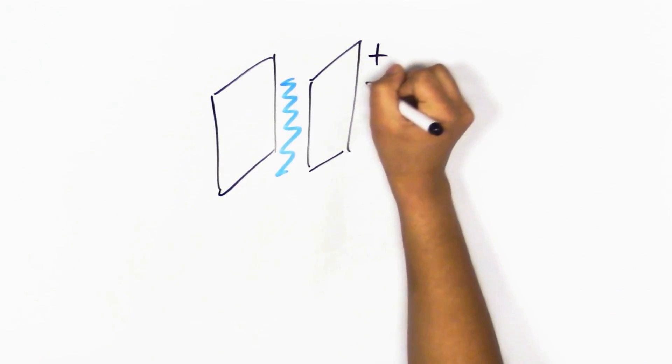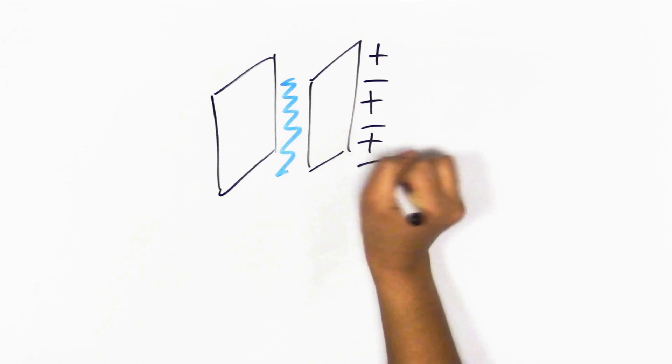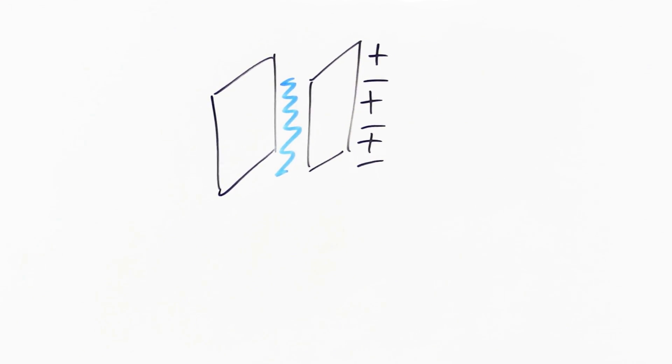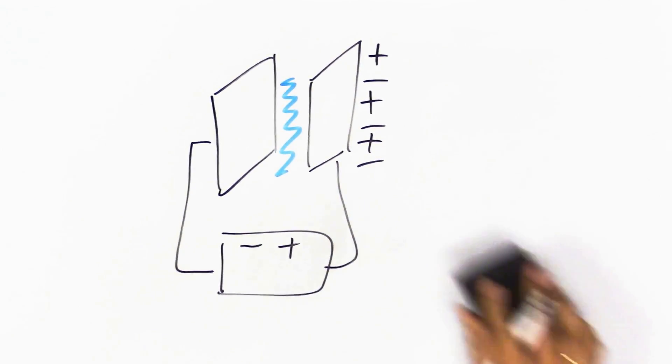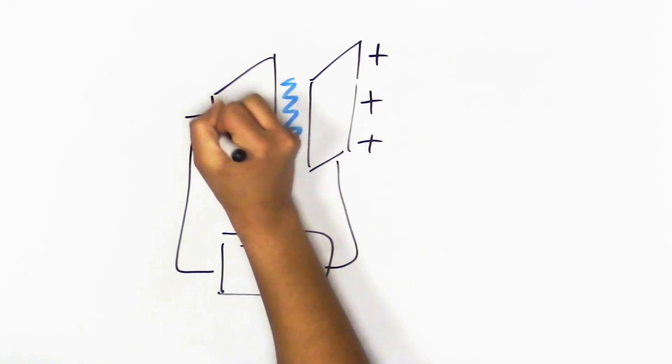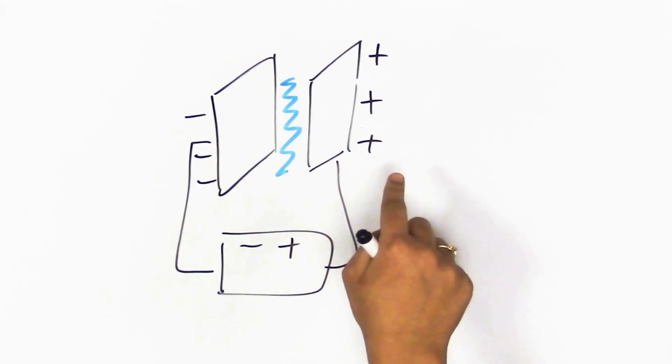Initially, these are neutrally charged, meaning they have positive and negative charges on them. But when you put a battery onto them, the negative charges accumulate on one side and the positive accumulate on the other.